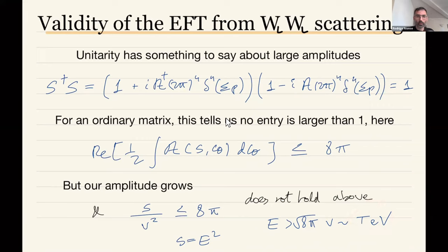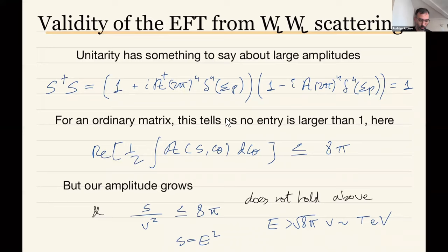That violation occurs for energies at about square root of π times the electroweak VEV. Putting in numbers from the W mass, you get roughly a tera-electron-volt — a thousand GeV scale. We cannot make sense of a theory that gives probabilities larger than one. This is a strong argument that something else must take over at this energy scale.